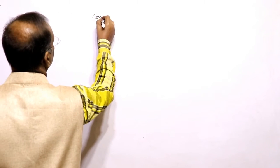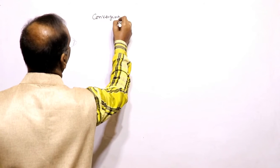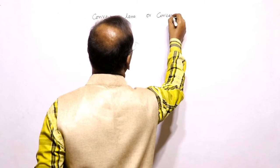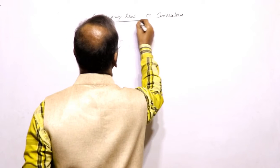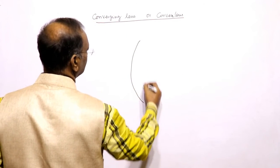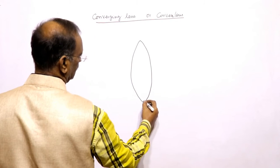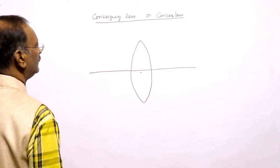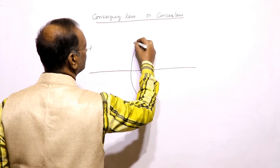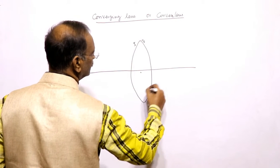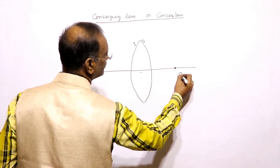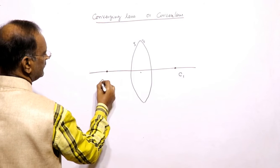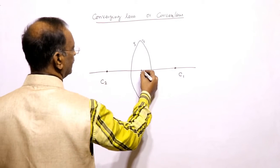For converging lens, or convex lens — let us take the convex lens here. This is the principal axis for the convex lens. This is surface number 1 and this is surface number 2. For surface number 1, the center of curvature C1 will be here. For the second surface, the center of curvature C2 will be here. This is the optic center.